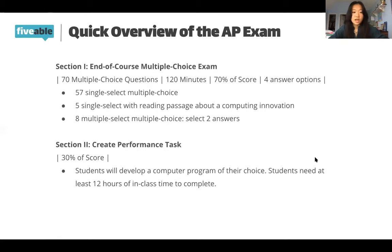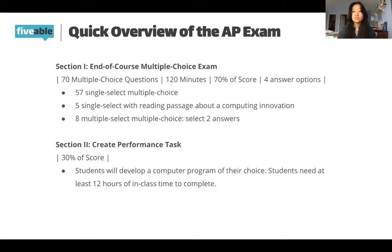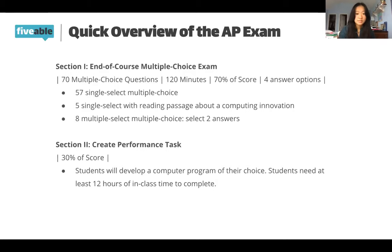A quick overview of the AP exam: there are now two sections — they removed the Explore section because it wasn't the best use of time. Section one is the end-of-course multiple choice exam, taken either in person or online depending on COVID. It consists of 70 multiple choice questions, 120 minutes, and counts for 70% of your score. All questions have four answer options.